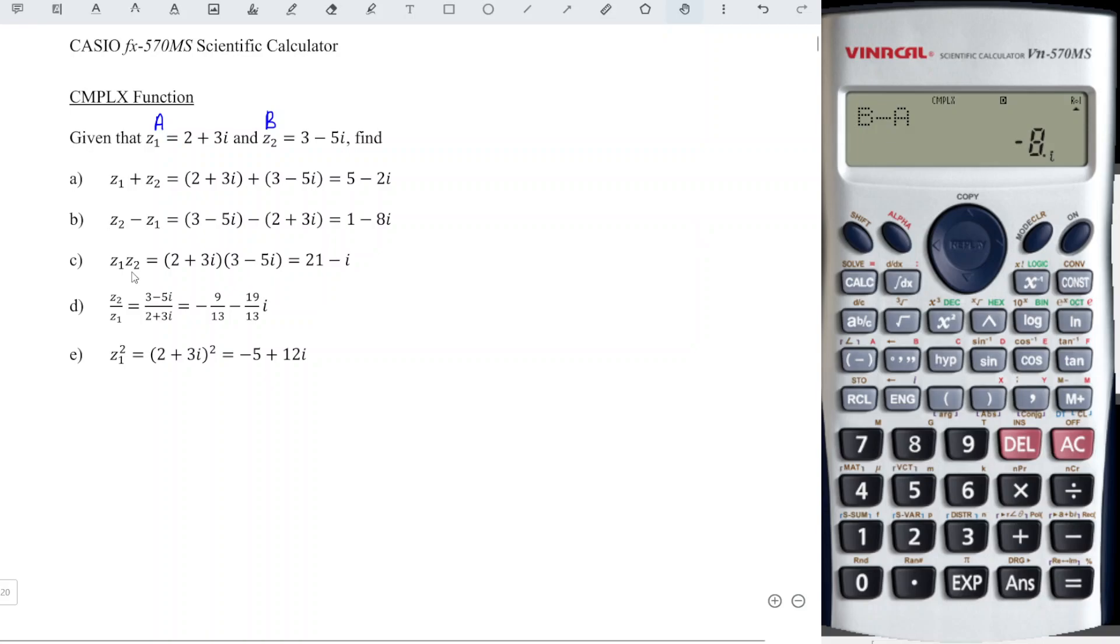Now we have z1 times z2, so a times b equals 21. Shift equals to get -1i, which is equivalent to -i.